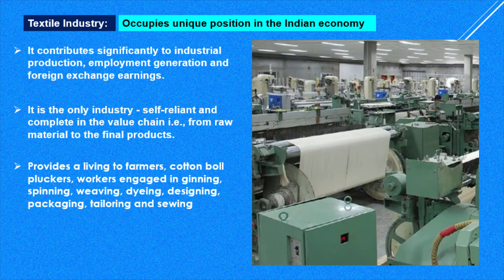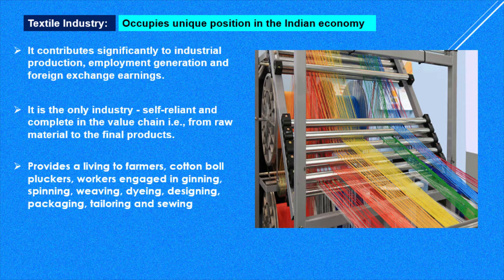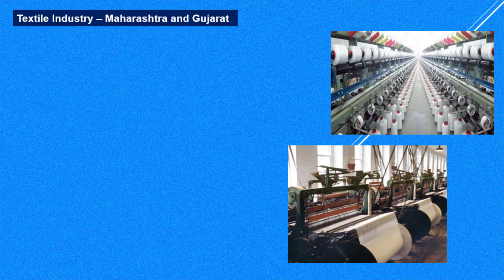Then comes weaving — making cloth — then dyeing, which is coloring, then designing, packaging, tailoring, and sewing. So many people are engaged in different activities. Apart from that, there are ancillary industries that support, like chemicals and dyes, packaging material, and even engineering work. That is why textile industry occupies a unique position in the Indian economy.